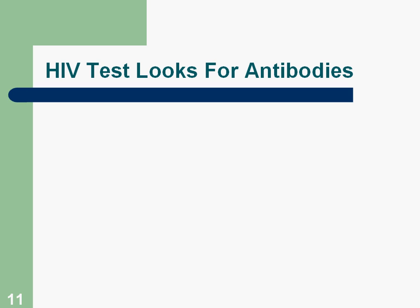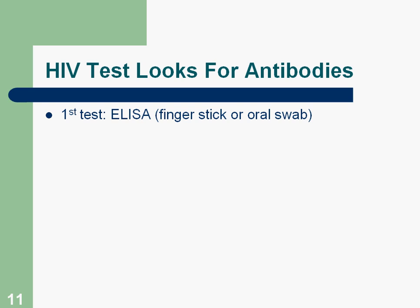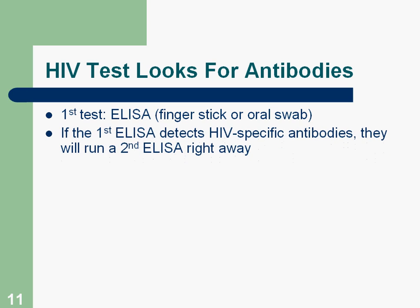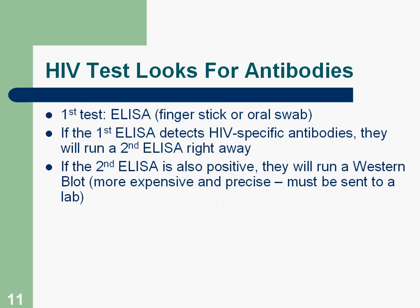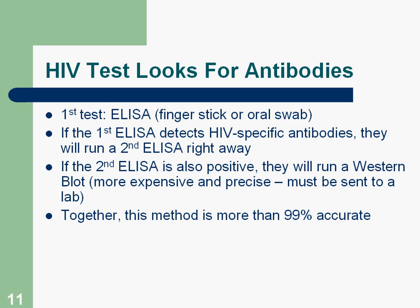An HIV test doesn't look for HIV itself — it actually looks for antibodies. The first test done is the ELISA test, which usually comes in the form of a finger stick or an oral swab, sometimes a blood draw. If the first ELISA detects antibodies, they'll run a second ELISA right away. If that also comes up positive, they'll run a Western Blot test, which is done in a lab, is more expensive and more precise. Together, this method is more than 99% accurate.